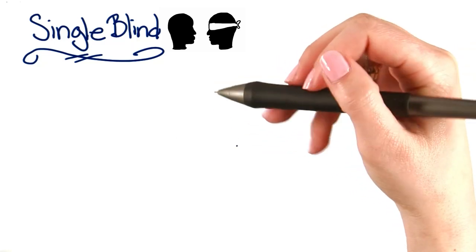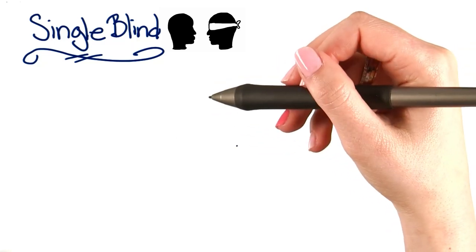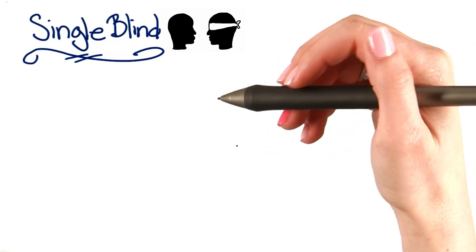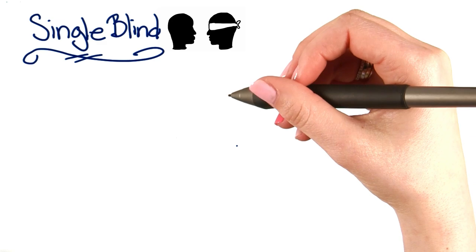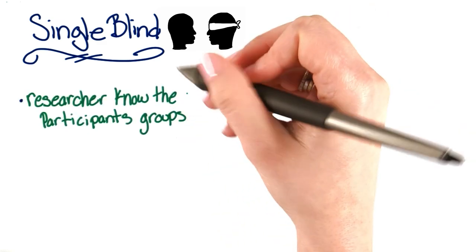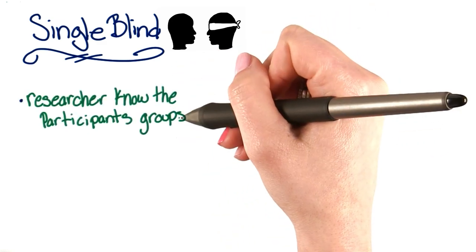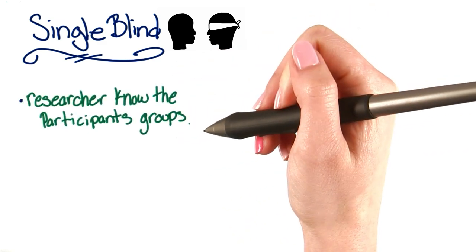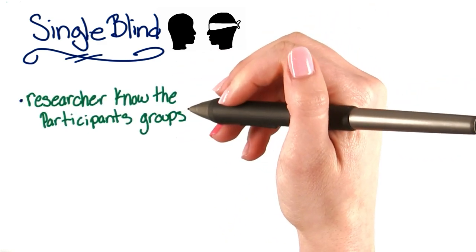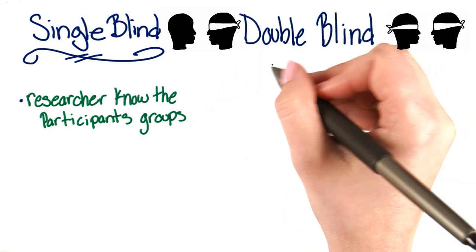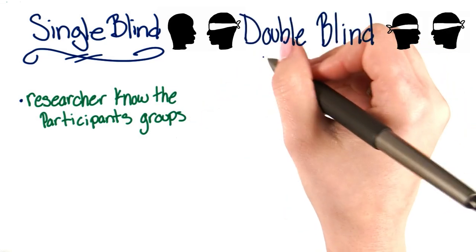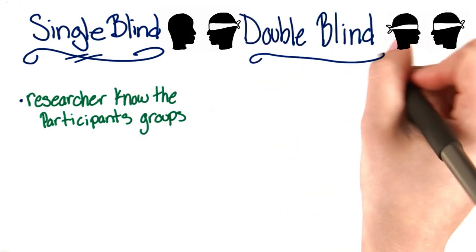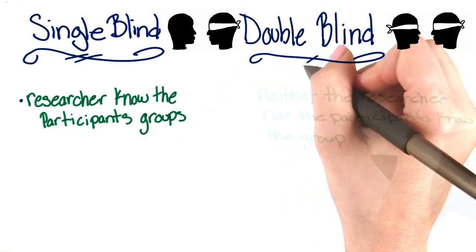We decided to do a single blind study for our caffeine and reaction time experiment. In a single blind study, the researcher knows what group the participants are in. There's another way that we can reduce bias in a study, and that's by doing a double blind study.